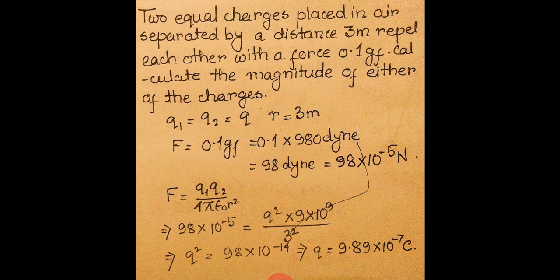Problem 2: Two equal charges placed in air, separated by 3 meters, repel with a force of 0.1 gram-force (gf), which is the gravitational unit of force in the CGS system. Converting: F = 0.1 gf = 0.1 × 980 dyne = 98 dyne. Converting dyne to Newton using 1 Newton = 10^5 dyne, we get F = 98 × 10^-5 Newton.